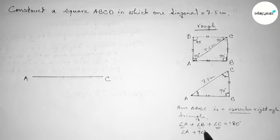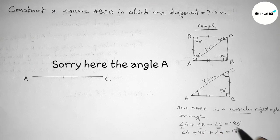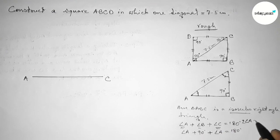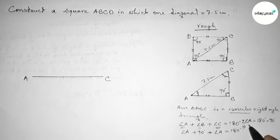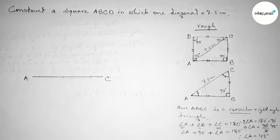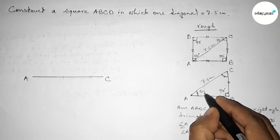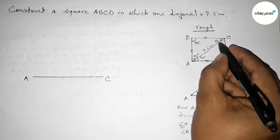We know that the sum of the three angles of a triangle equals 180 degrees. This angle is 90 degrees, so angle A plus 90 plus angle A equals 180, giving 2A equals 90, so angle A equals 45 degrees. Therefore angle A equals 45 degrees and angle C also equals 45 degrees.